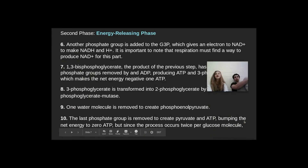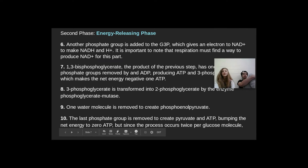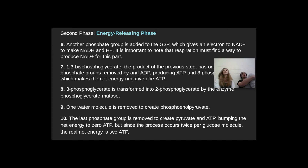The second phase is energy-releasing. Another phosphate group is added to the G3P, which gives an electron to NAD+ to make NADH and H+. It is important to note that respiration must find a way to regenerate NAD+.